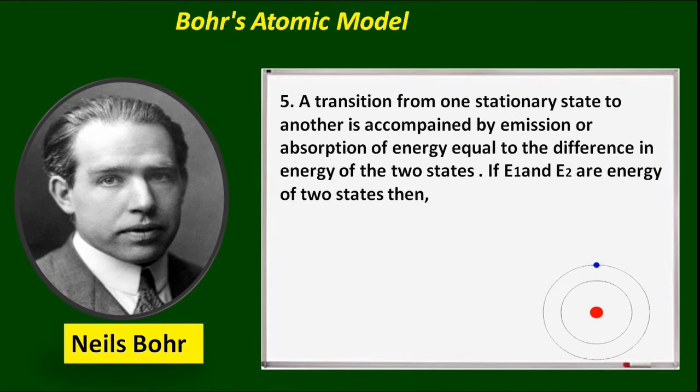A transition from one stationary state to another is accompanied by the emission or absorption of energy equal to the difference in energy of the two states. If E1 and E2 are the energies of the two states, then the change in energy: E2 − E1 = hν.